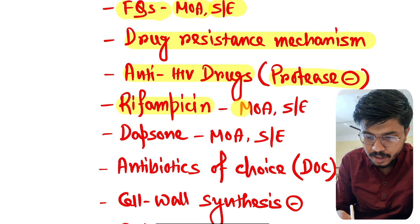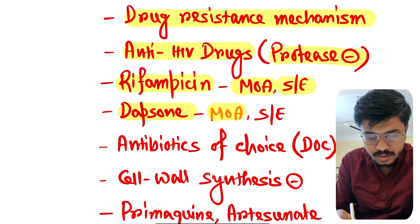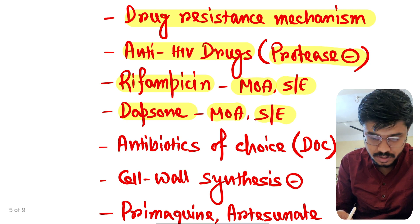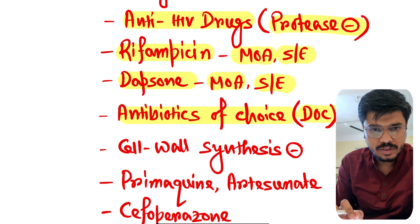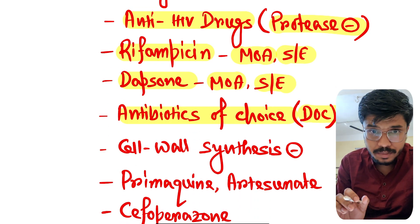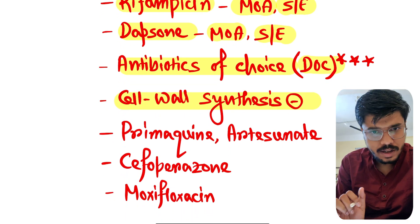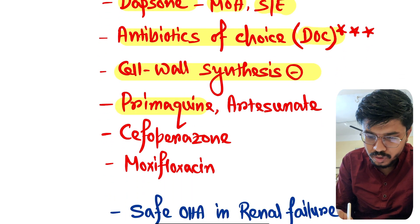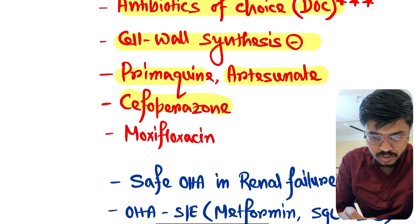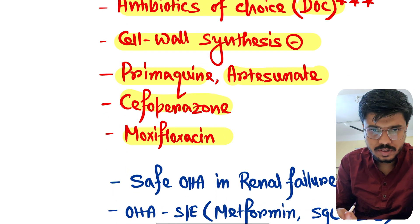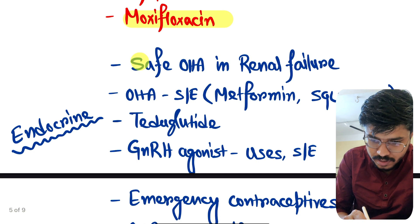Anti-HIV drugs, especially zidovudine and protease inhibitors — all are important. Rifampicin mechanism of action and side effects. Dapsone mechanism and side effects. Antibiotics of choice — all drug of choice topics are very very important. Cellular synthesis inhibitors — again important. Primaquine, artesunate, safe options, moxifloxacin.